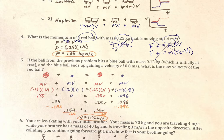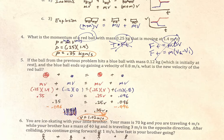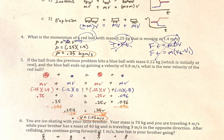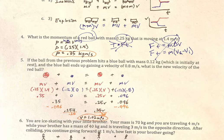Now just get V by itself. The only thing associated with V is 0.25, so divide both sides by 0.25. We're basically doing 0.254 ÷ 0.25, which is very close to 1. Going to a couple more decimal places, we get 1.02 meters per second as the new velocity of the red ball.